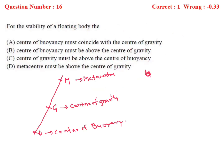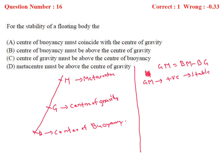We can also express this as GM = BM − BG. If GM is positive → stable equilibrium. If GM equals zero → neutral equilibrium. If GM is negative → unstable equilibrium. You have to remember all three conditions, as other examinations also ask these questions.